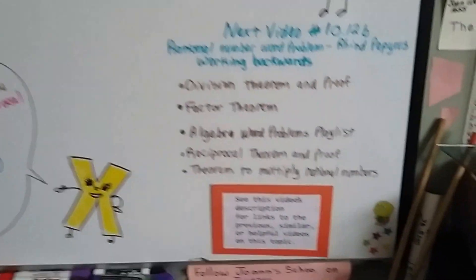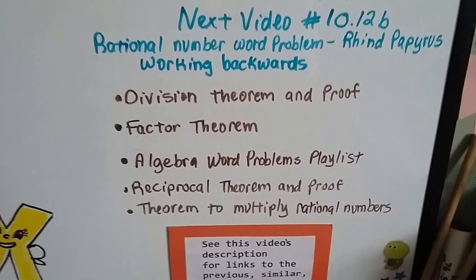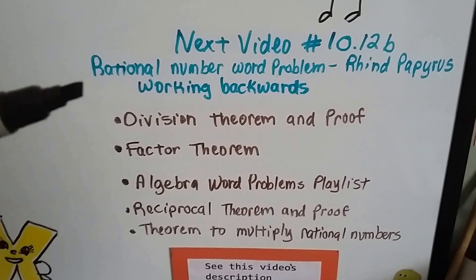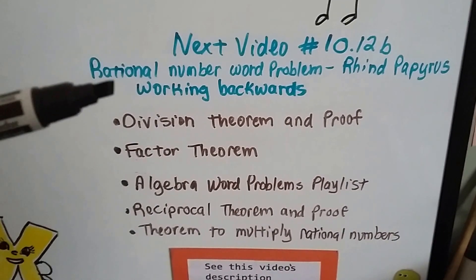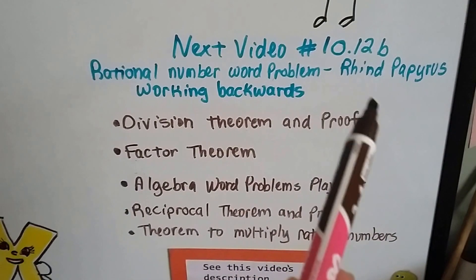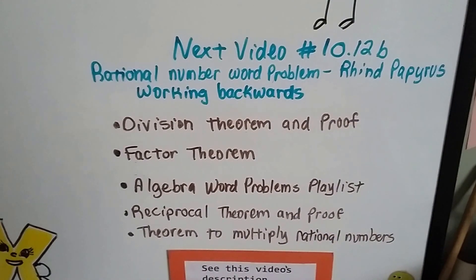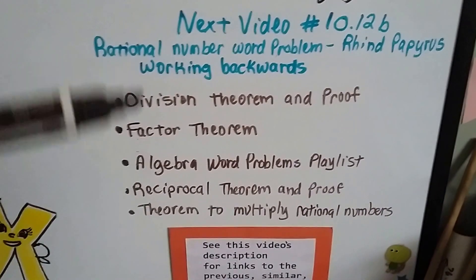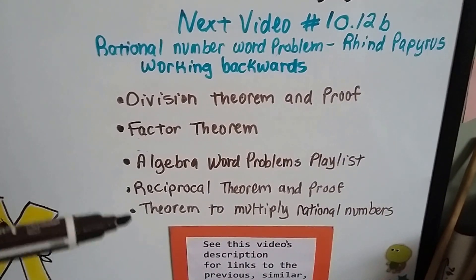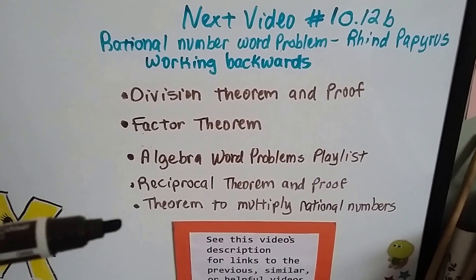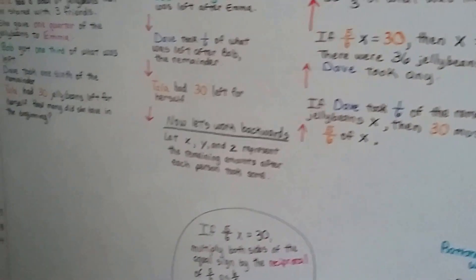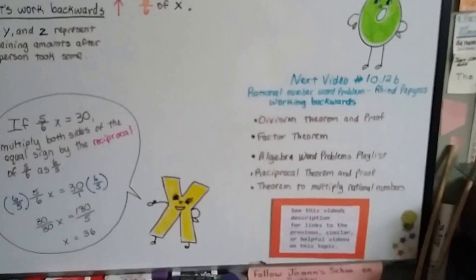So our next video is going to be 10.12b, and it's going to be another rational equation number word problem. We're going to work backwards again, and this is kind of a famous one. It's about the Rhind Papyrus, which is an Egyptian papyrus. If you want to link to any of the previous videos that we did with theorems and proofs, or the factor theorem, and my algebra word problem playlist that has lots of word problems like this in it, you can just click on the link in the description.